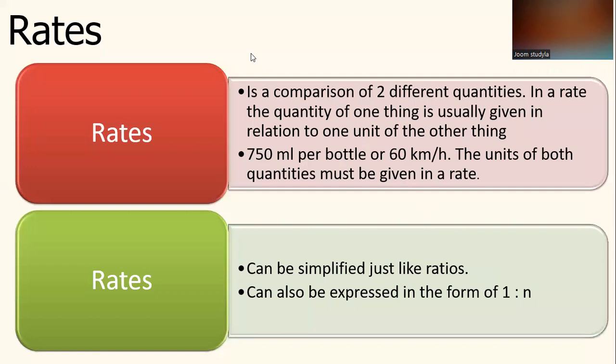Next, we go to the rates topic. What is a rate? A rate is a comparison of 2 different quantities. In a rate, the quantity of one thing is usually given in relation to one unit of the other thing. For example, 750 ml per bottle or 60 km per hour. The units of both quantities must be given in a rate. Rates also can be simplified just like ratios, and rates can be expressed in the form of 1 to N.